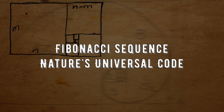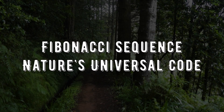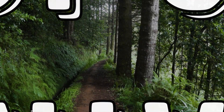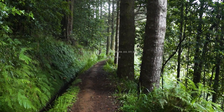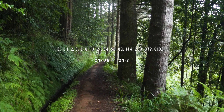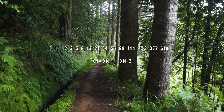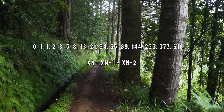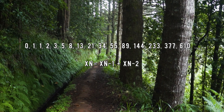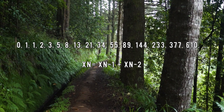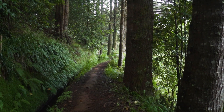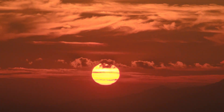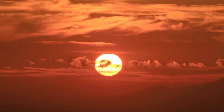So what is the Fibonacci sequence? It's a series of numbers that starts with zero and one, and each subsequent number is the sum of the previous two. So it goes like this: 0, 1, 1, 2, 3, 5, 8, 13, 21, 34, 55, and so on. Simple, right? But what makes this sequence so fascinating is that it appears everywhere in nature.